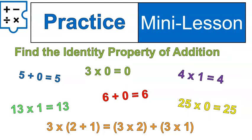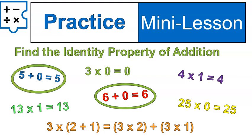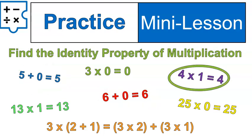Let's do our next group. Find the identity property of addition. Remember, with the identity property you're looking to get the same number at the end that you had at the beginning. When it says addition, you know you're adding. So we are looking at six plus zero equals six, and five plus zero equals five. Those are the two identity properties of addition in our examples.